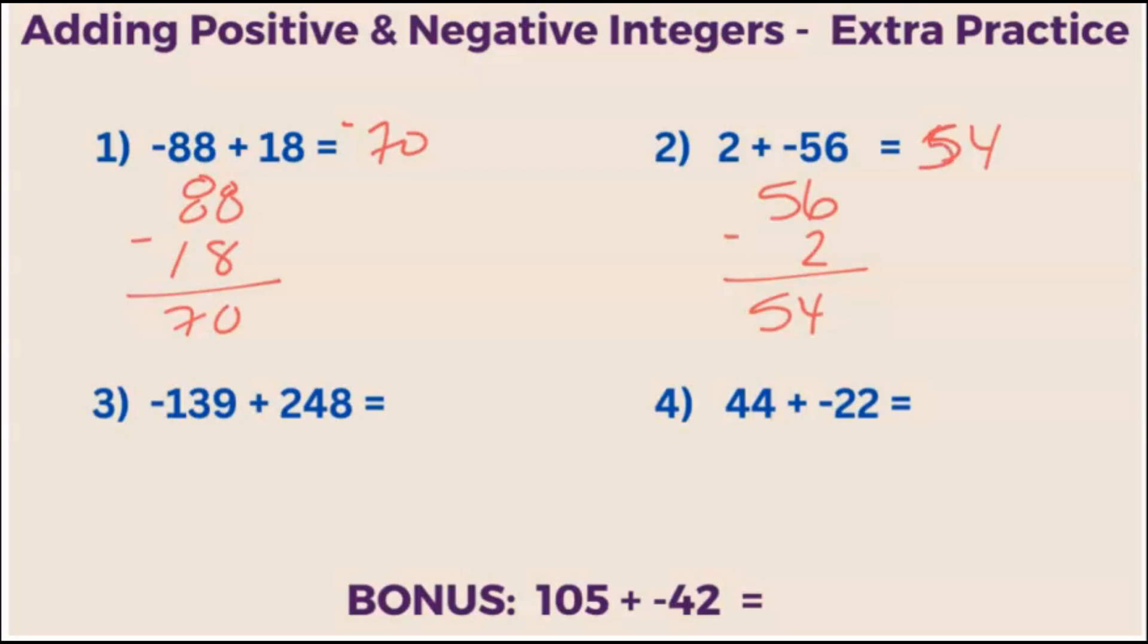54 has the largest absolute value and it is negative. Positive 2 plus negative 56 is equal to negative 54.